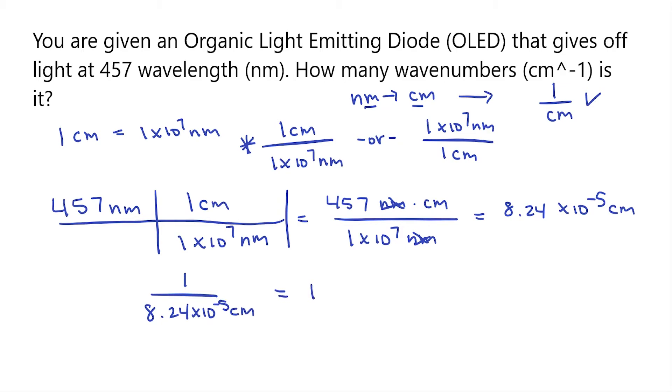This is going to be equal to 12,135 centimeters to the negative 1, which is the same as if I said 1 over centimeters. And that is how you convert from wavelength to wavenumbers.